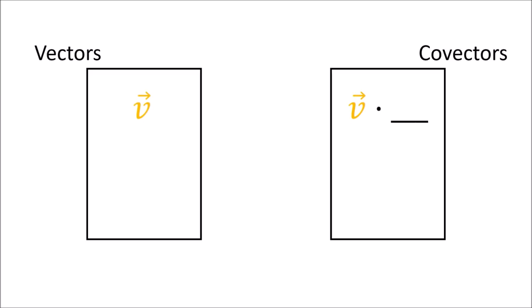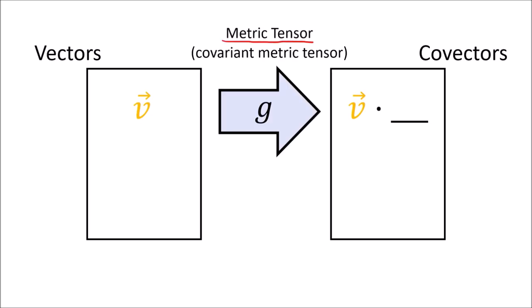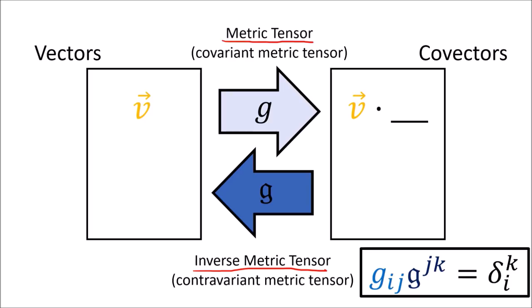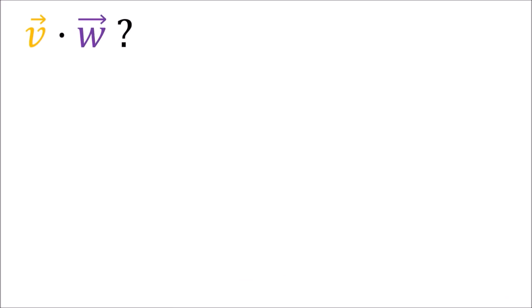If you recall from my previous video on raising and lowering indexes, when we had vector and covector partners, the way we changed from v to v dot something was by using the metric tensor. The reverse process, to go in the other direction, was done using the inverse metric tensor, where the components of the inverse metric tensor are defined by a formula where summation with the components of the ordinary metric tensor gives the Kronecker delta. Let's remind ourselves how we can use the metric tensor to change between the vector v and the covector v dot something. To compute the dot product v dot w, we can expand out the vectors as linear combinations of basis vectors in a given basis.